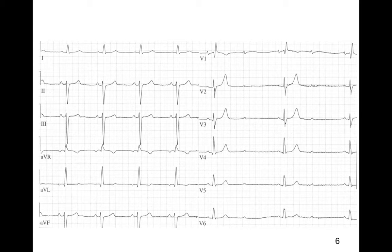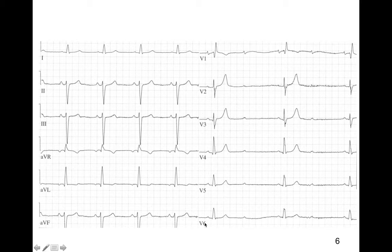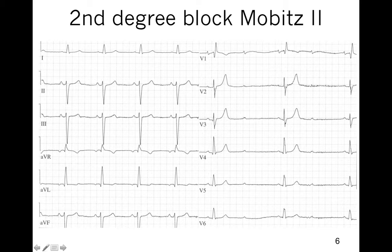Please interpret this ECG. This is an example of a P wave followed by QRS — P wave, QRS, P wave, QRS — with no prolongation of the PR interval. And then suddenly there is a loss of a QRS complex. So most P waves conduct, some don't, with no prolongation of the PR interval. This is second-degree block type 2, or Mobitz 2.